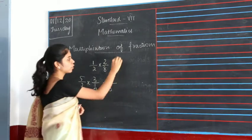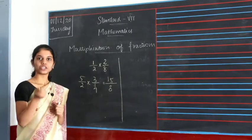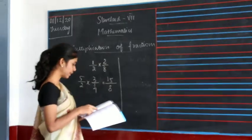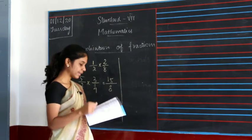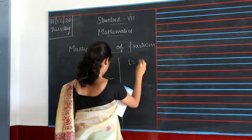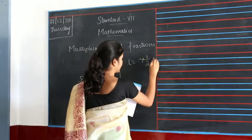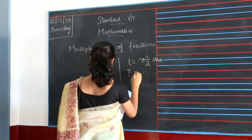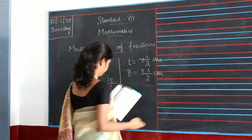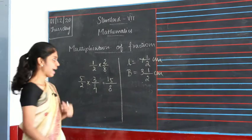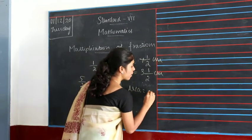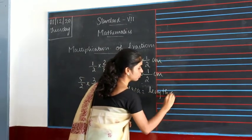Now we are going to see an example where we are actually using fractions and fraction multiplication. They asked us to find the area of the rectangle. Length of the rectangle is 7 and 1 by 2 centimeters and breadth is 3 and 1 by 2 centimeters. This is in mixed fraction, and area is multiplication of length into breadth.